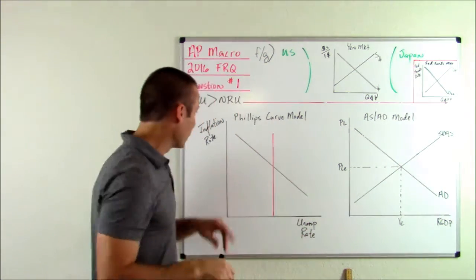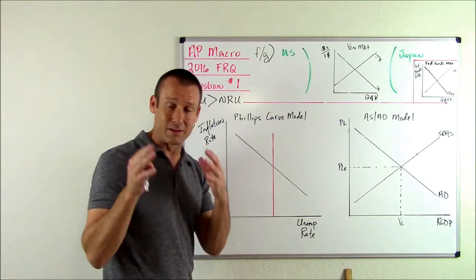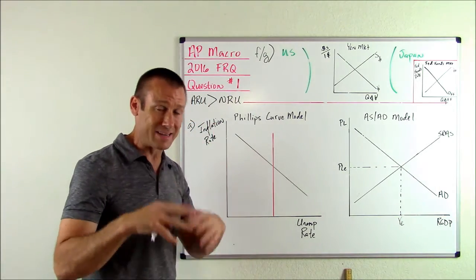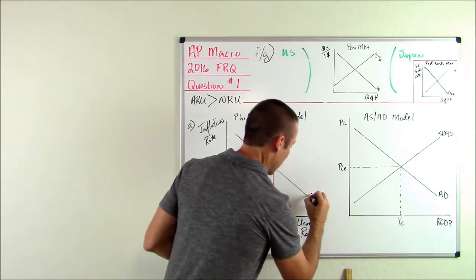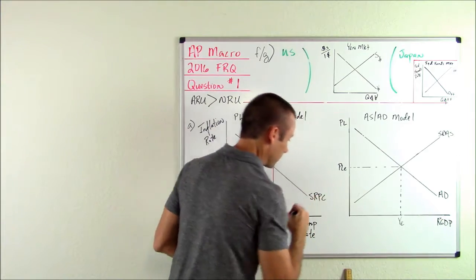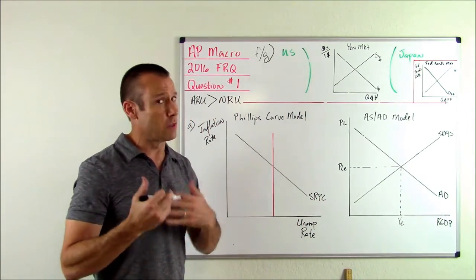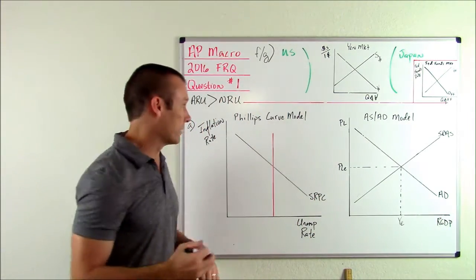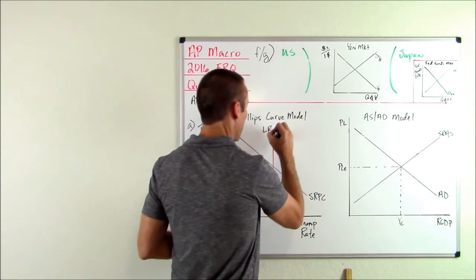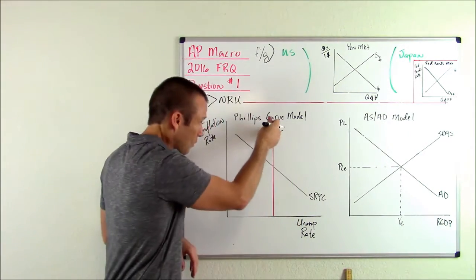In the short run, the relationship between inflation and unemployment is inverse — when one goes up, the other tends to go down. So we draw the short-run Phillips curve showing that inverse relationship. In the long run, there is no relationship. This is the LRPC — the long-run Phillips curve.